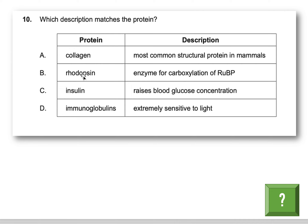For option B, rhodopsin — we know A is true, but let's confirm. They're saying rhodopsin is an enzyme for carboxylation of RuBP. No, that is RuBisCO, not rhodopsin. They're basically mismatching the proteins. The protein that does that is RuBisCO, which you'll learn about in photosynthesis.